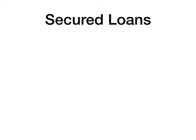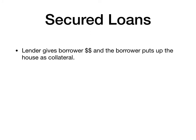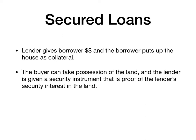When you purchase real property, unless you use all cash, there is typically a secure loan involved. A secure loan is one where the lender gives the borrower money, and the borrower puts up the house or the land as collateral. This allows the buyer to take possession of the land.